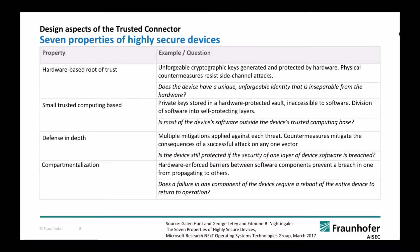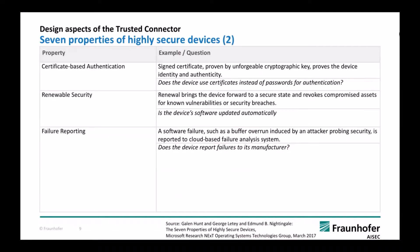Further properties include compartmentalization — enforcing barriers between different software components; certificate-based authentication so you have a proven identity that cannot be cloned; renewable security, meaning the system must be patchable and kept updated; and failure reporting — if something breaks, we want to know about it.